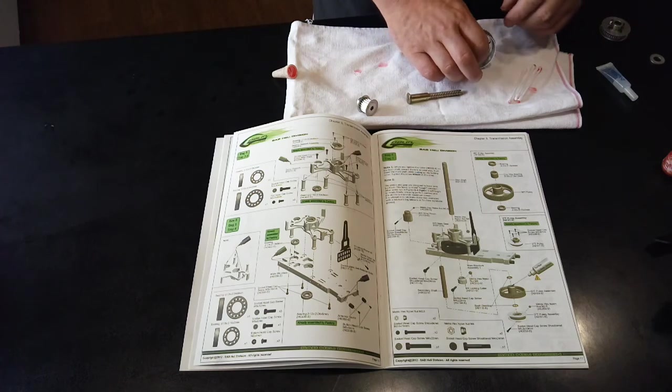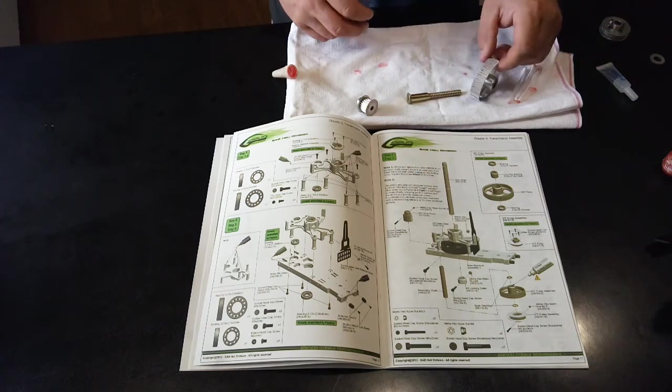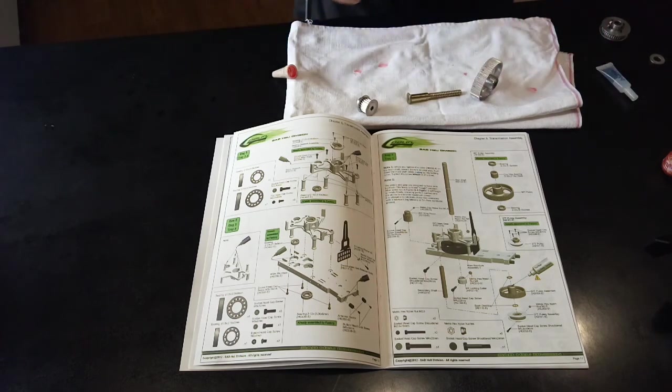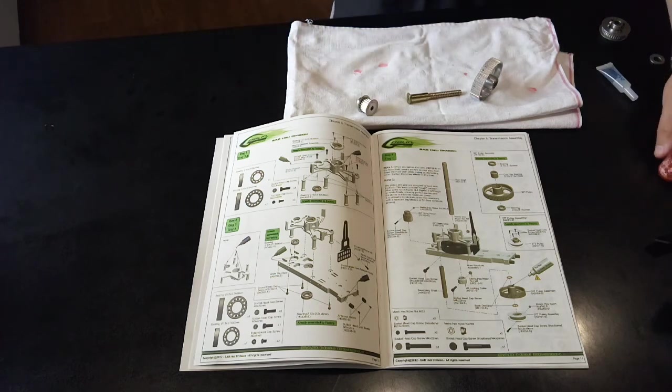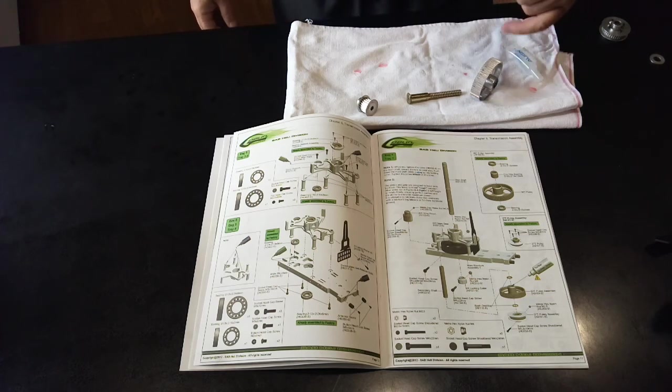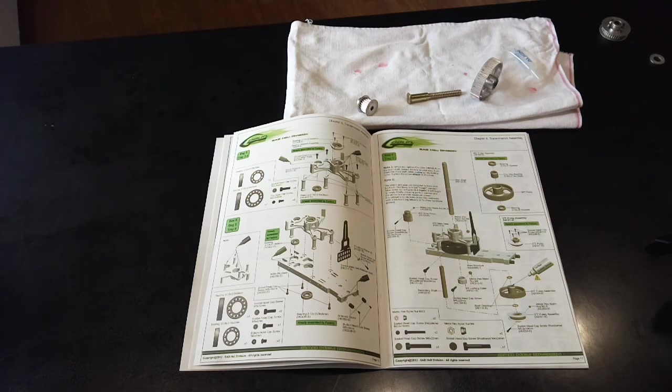So we'll let that dry, let that chemically react. Which should take up to half an hour to an hour. And once that's actually chemically gone off, it'll be rock solid. And then we'll be able to put some silicone grease inside the one-way bearing itself. Okay, we'll get on to that once this has gone off.